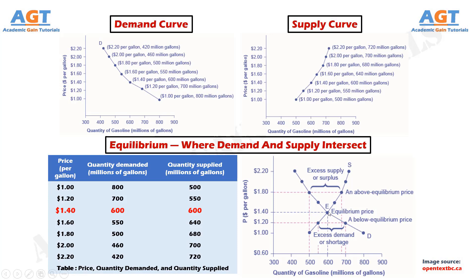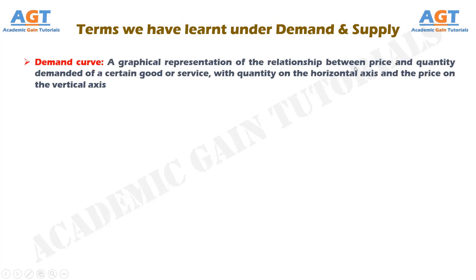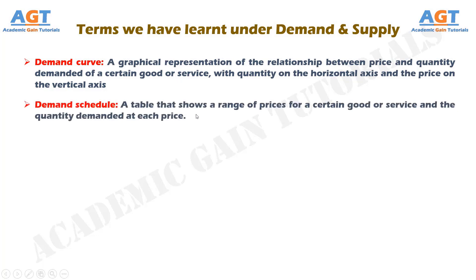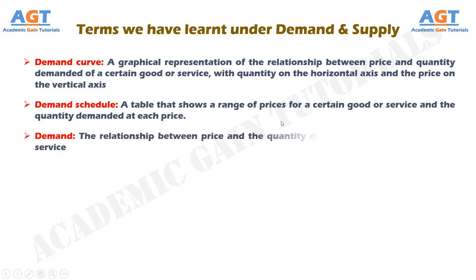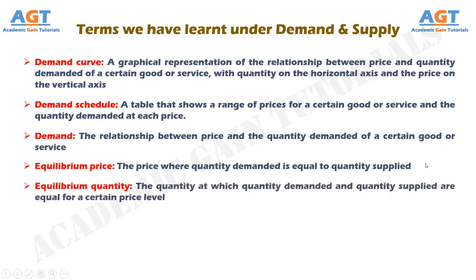Now let's review the terms we just learned. The demand curve is a graphic representation of the relationship between price and quantity demanded of a certain good or service, with quantity on the horizontal axis and the price on the vertical axis. The demand schedule is a table that shows a range of prices for a certain good or service and the quantity demanded at each price. Demand is the relationship between price and the quantity demanded of a certain good or service. The equilibrium price is the price where quantity demanded is equal to quantity supplied. The equilibrium quantity is the quantity at which quantity demanded and quantity supplied are equal for a certain price level.